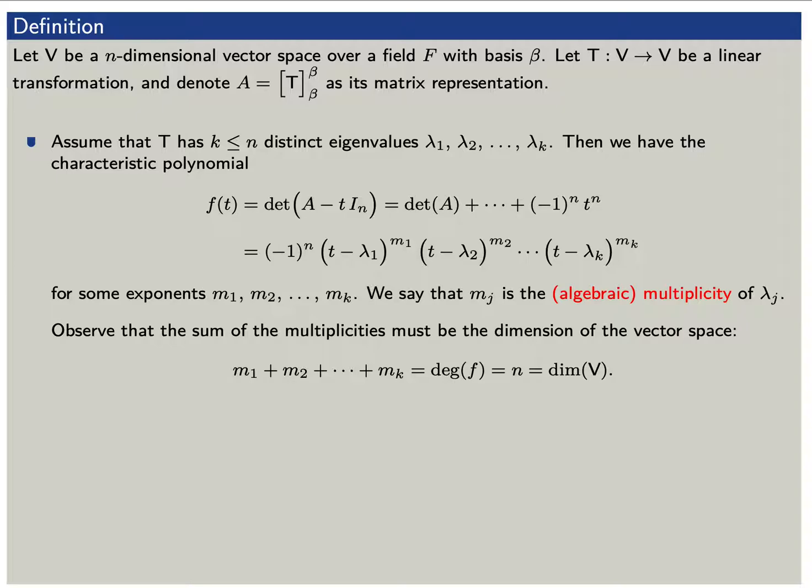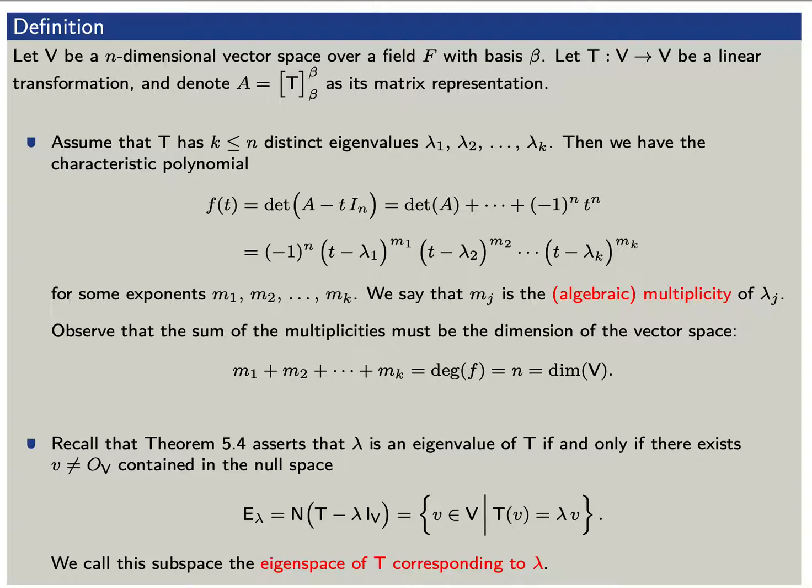Recall that if lambda is an eigenvalue for T, then there exists a non-zero vector v in the null space of the linear transformation T minus lambda I sub V. This null space we'll call E sub lambda, and we'll call this the eigenspace of T corresponding to lambda. We're going to focus quite a bit on this eigenspace today.